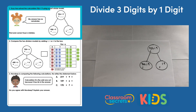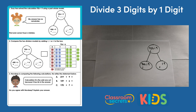Question one: Susie has solved the calculation 926 divided by 9 using a part-whole model. She says her answer has no remainder. Find and correct Susie's mistake. Straight away we know she's made a mistake, which means we need to solve the calculation ourselves to find where that mistake has happened.